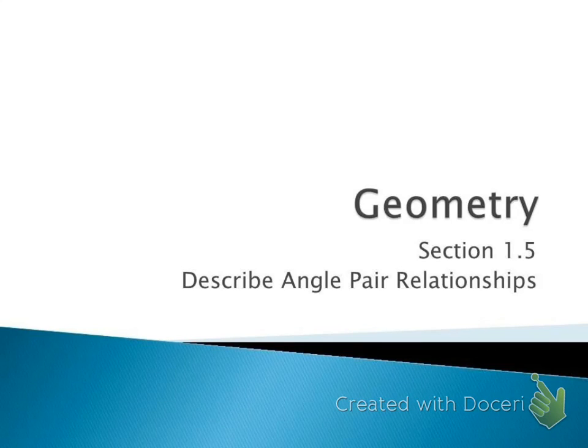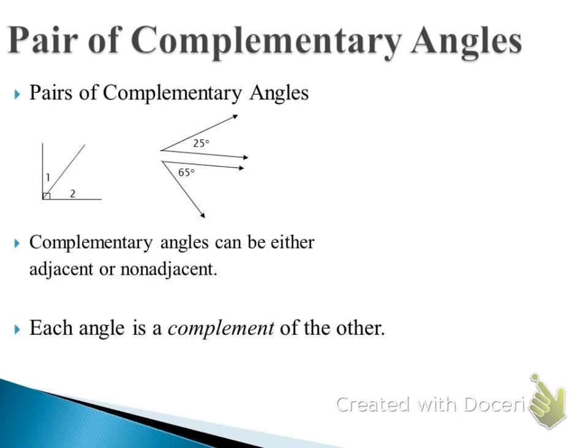In section 1.5 we're looking at different angle pair relationships that exist. The first one we're going to look at is complementary angles. If I look at the examples below, I have angles 1 and 2 forming a pair, and then 25 and 65. Both of those sets add to 90 degrees, so complementary angles are two angles whose sum is 90 degrees.